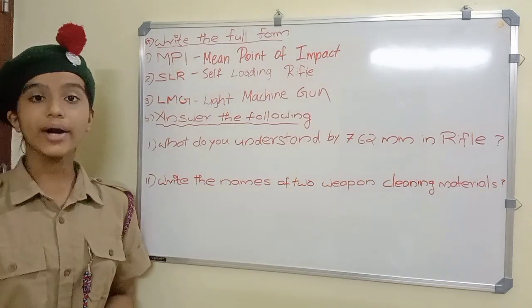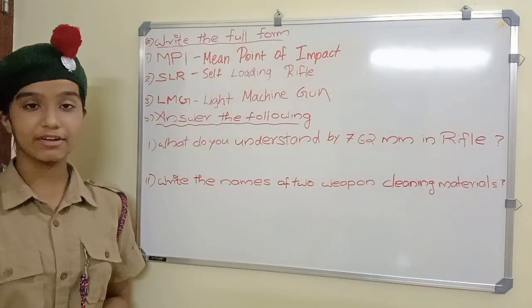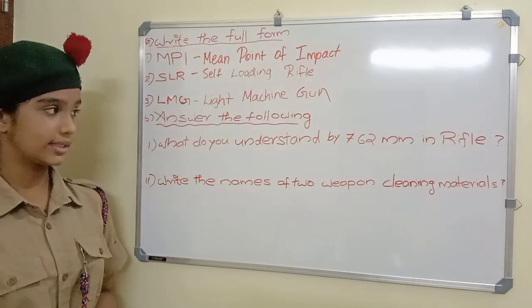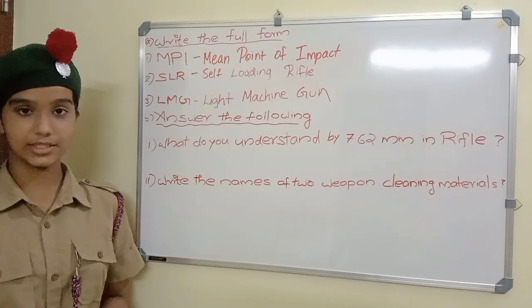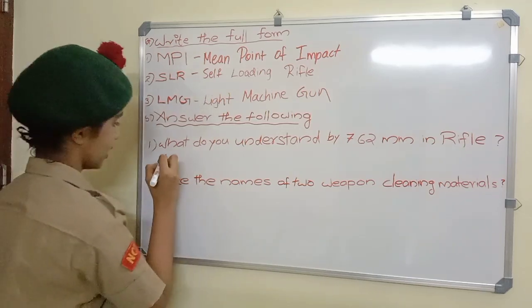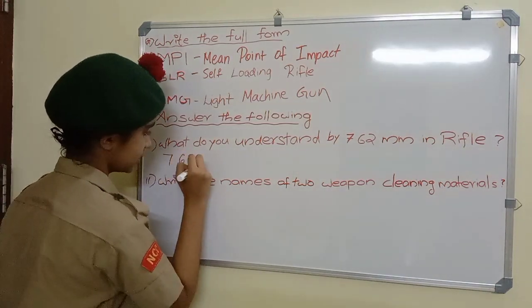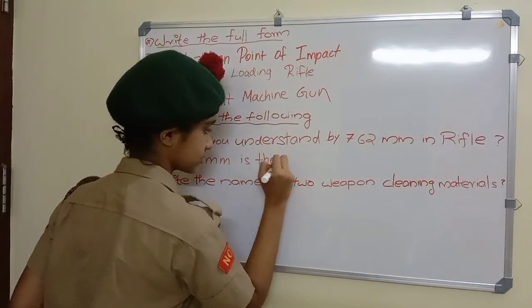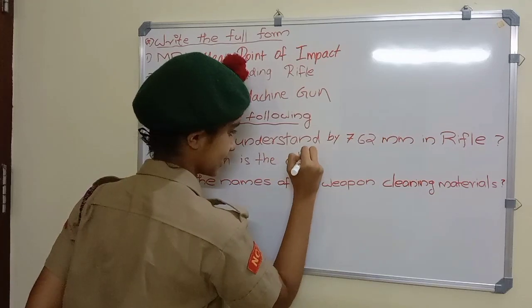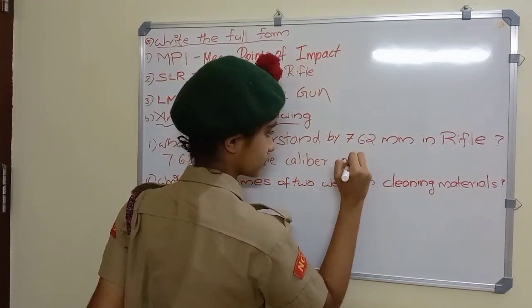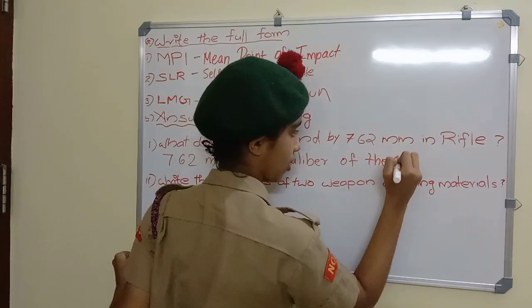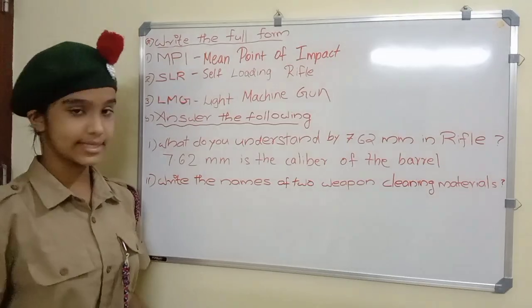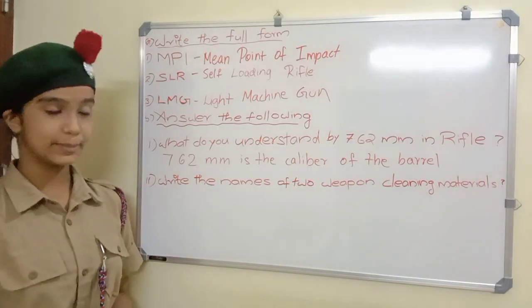Answer the following. What do you understand by 7.62 mm in rifle? Answer: 7.62 mm is the caliber of the barrel.